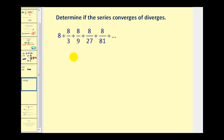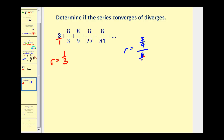For the next example, we're not given the formula used to generate the terms — we have to recognize it ourselves. All terms are fractions; the numerators are all eight and the denominators are powers of three: three to the zero, three to the first, three to the second, and so on. We're multiplying the denominator by three each time, which is the same as multiplying by one-third, so r equals one-third. Alternatively, we can take any term, say eight-ninths, and divide by the term before it, eight-thirds: eight-ninths times three-eighths simplifies to one-third, confirming r equals one-third.